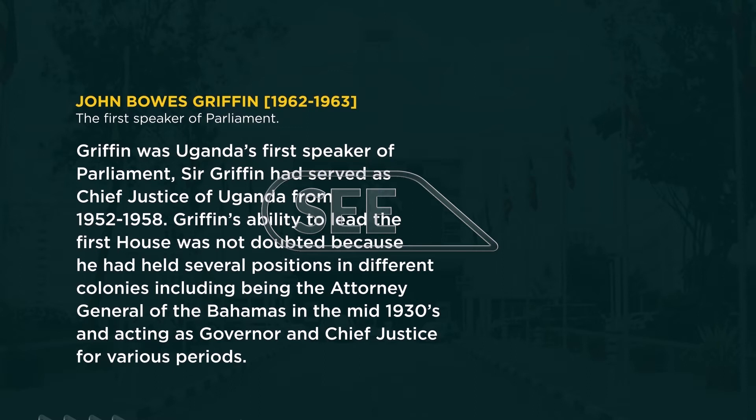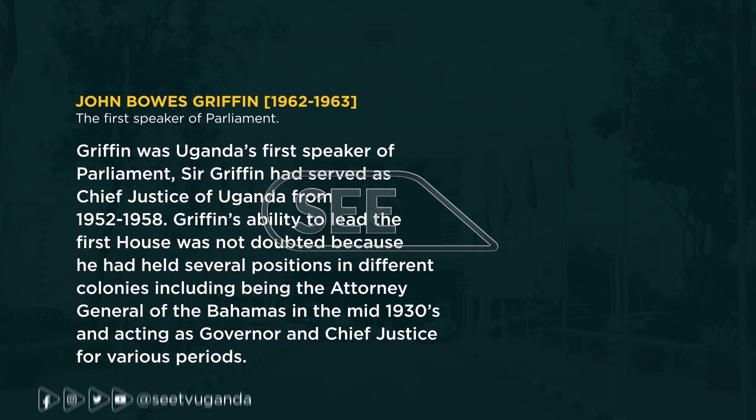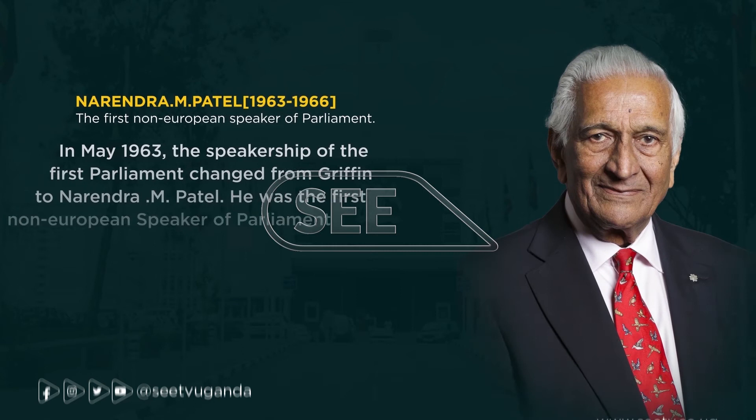Griffin's ability to lead the first house was not doubted because he had held several positions in different colonies, including being the Attorney General of the Bahamas in the mid-1930s and acting as Governor and Chief Justice for various periods.